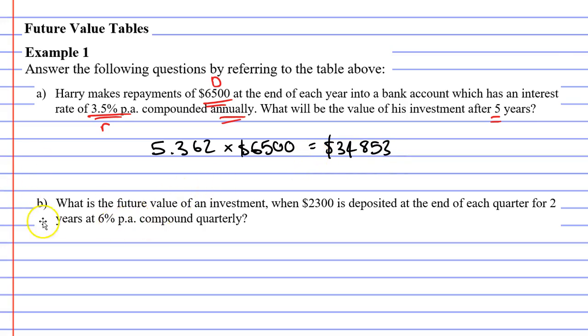All right, let's move on to question B. It says, what is the future value of an investment when $2,300 is deposited? So, this is our repayment. And it's deposited at the end of each quarter for two years. Now, we need to be careful here. It's done quarterly. Now, there are four quarters in a year. So, the number of time periods, N, is 2 times 4, which gives us eight quarters.